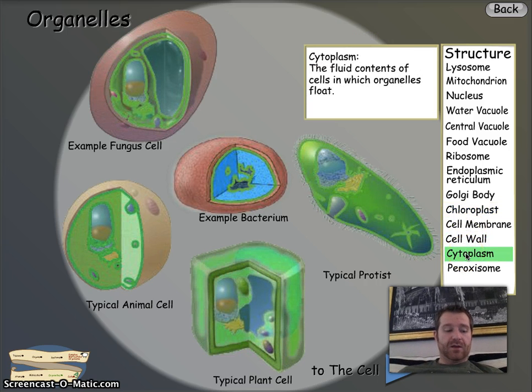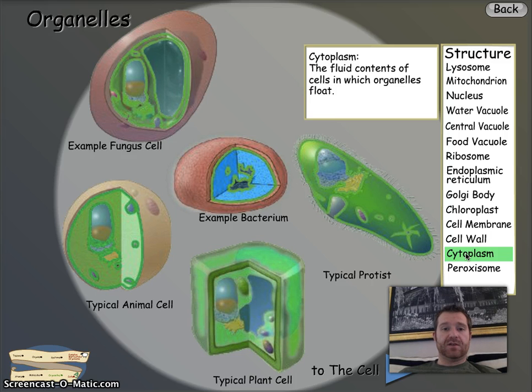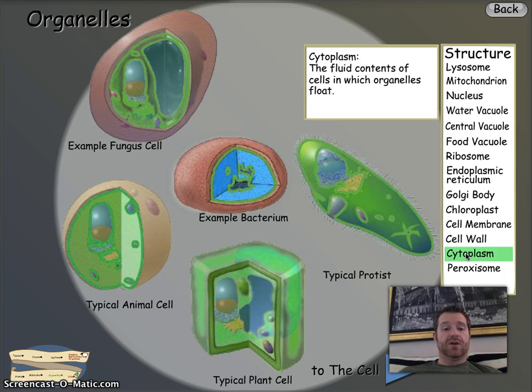Cytoplasm. This is the fluid contents of the cell in which organelles float — so it holds the organelles. Look at the picture: yes it's in plant cells, and yes it's in animal cells.